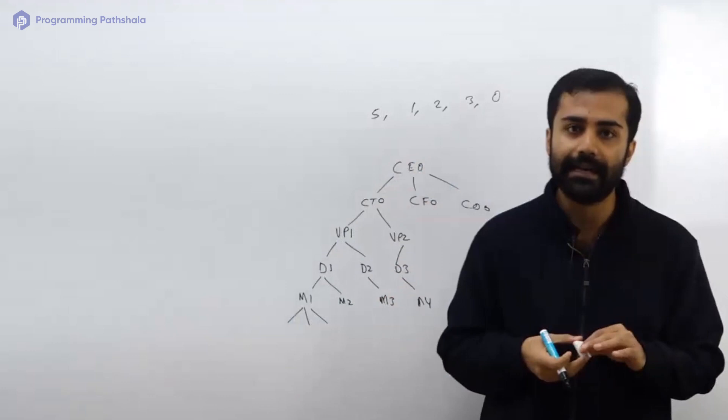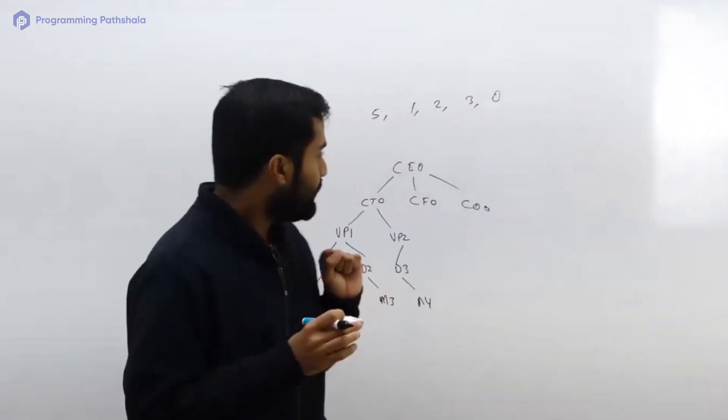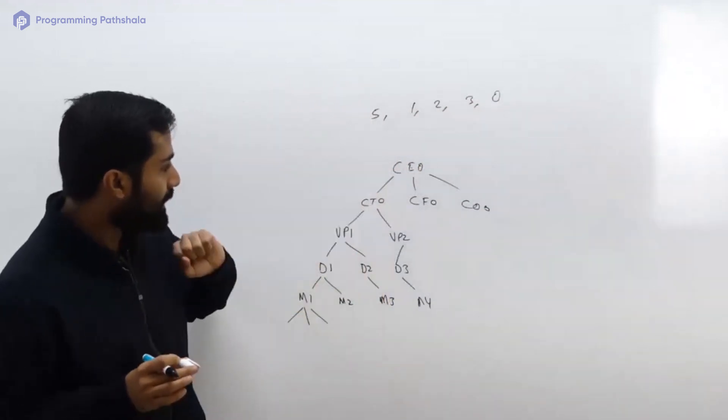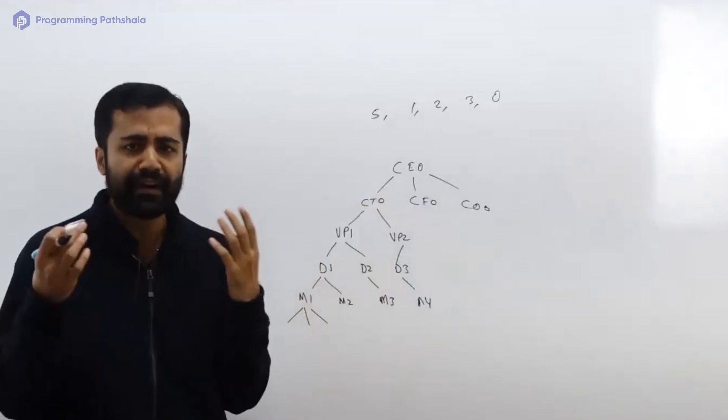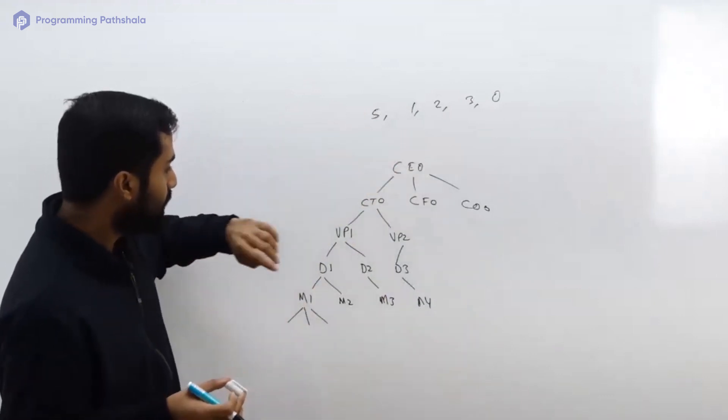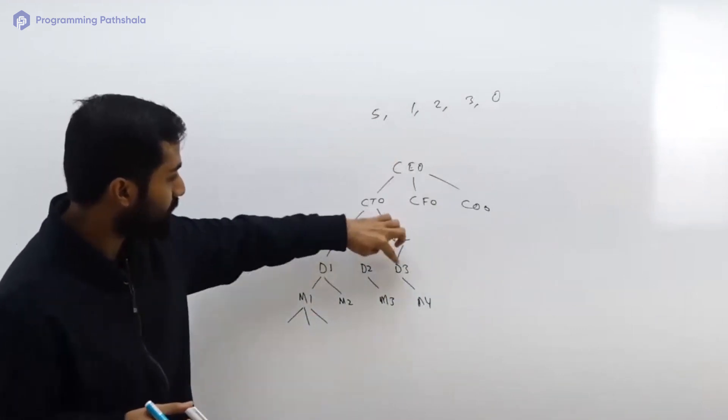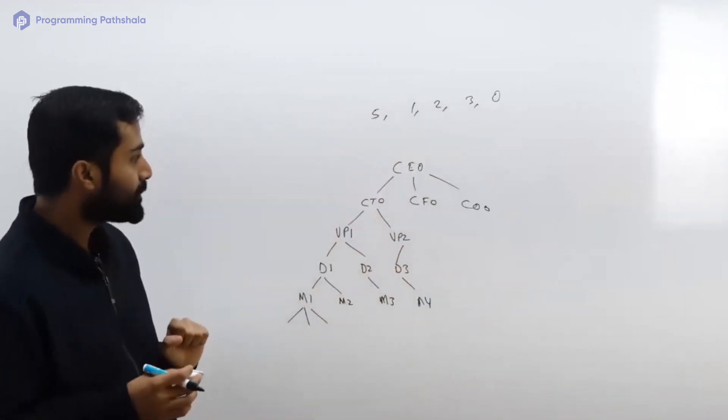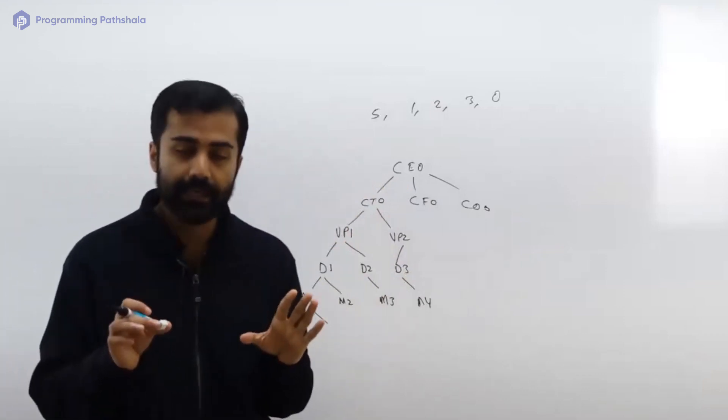Now for every employee, let's say there is some kind of ID or some kind of tag. So let's say the ID of CEO is CEO, this guy is VP1, this guy is VP2, this guy is Director 3.